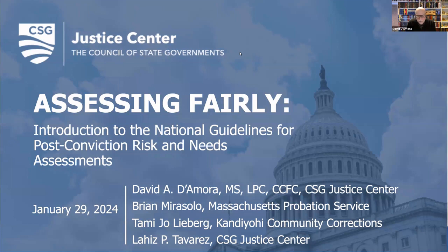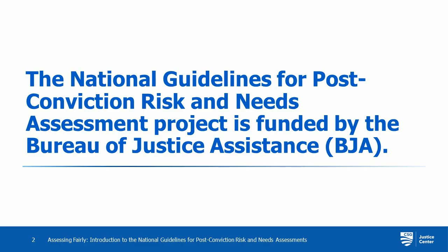My name is David DeMora. I am a Senior Policy Advisor at the Council of State Governments Justice Center, where I work on a variety of projects, including a focus on risk and needs assessment. What we're going to be talking about today is the result of a project that started about four and a half years ago and took about three years of work to develop the National Guidelines for the use of post-conviction risk and needs assessment. This was developed in partnership between the Bureau of Justice Assistance and the CSG Justice Center.